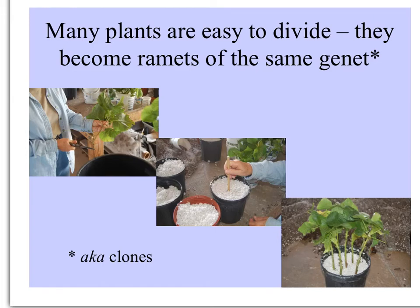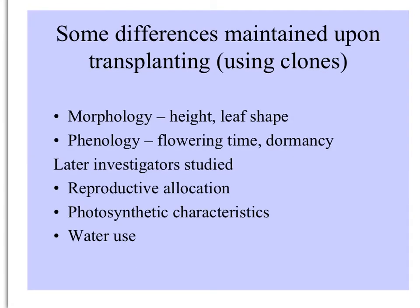This team, and many ecologists afterwards, took advantage of the fact that many plants are easy to divide — you can make cuttings and grow different pieces of the same genetic individual, in other words, clones. Transplanting these clones to different elevations, Clausen, Keck, and Heise found that some differences were maintained: morphology such as height and leaf shape, phenology — the time they flowered and how long plants were dormant. Other investigators found differences in reproductive allocation, photosynthetic characteristics, and water use efficiency.